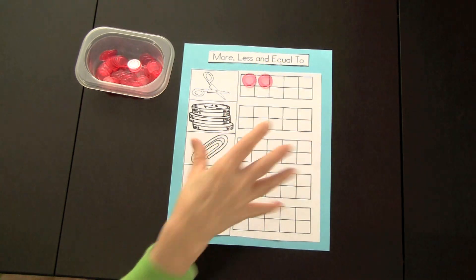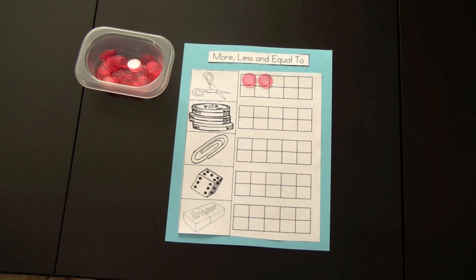Using the ten frame grids, they could easily determine which was selected the most, or which had the most, or which one had the least, or if there was an equal amount.